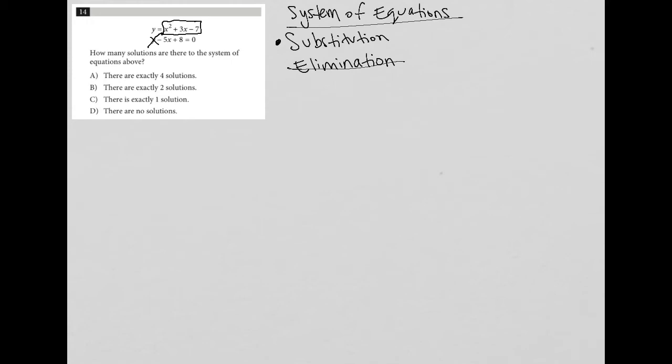So in the second equation, if I were to substitute y for x squared plus 3x minus 7, I'd have that in the beginning, and then I still have my minus 5x plus 8 equals 0.